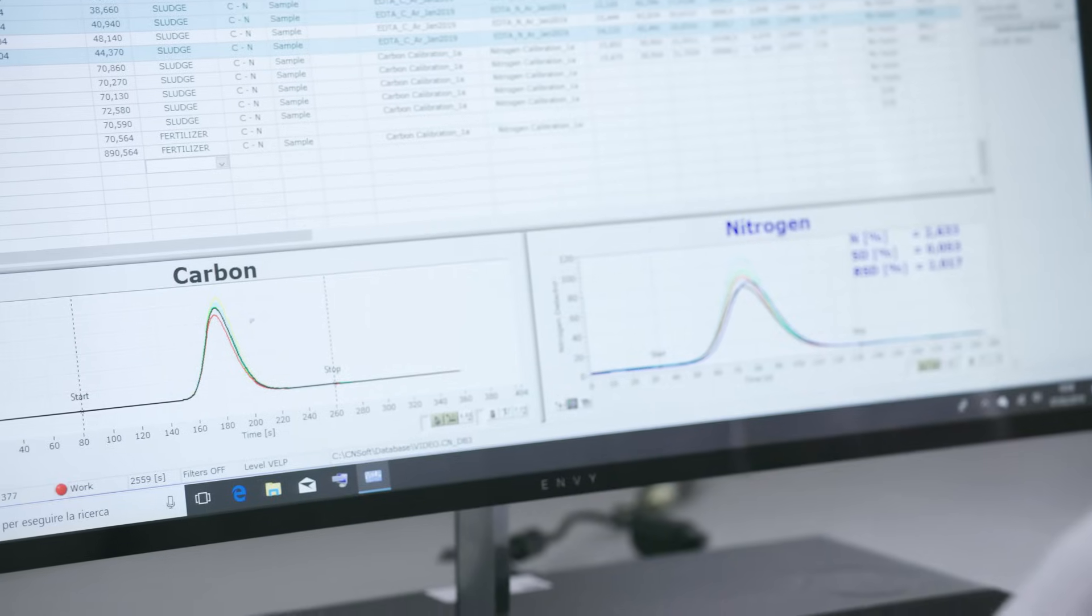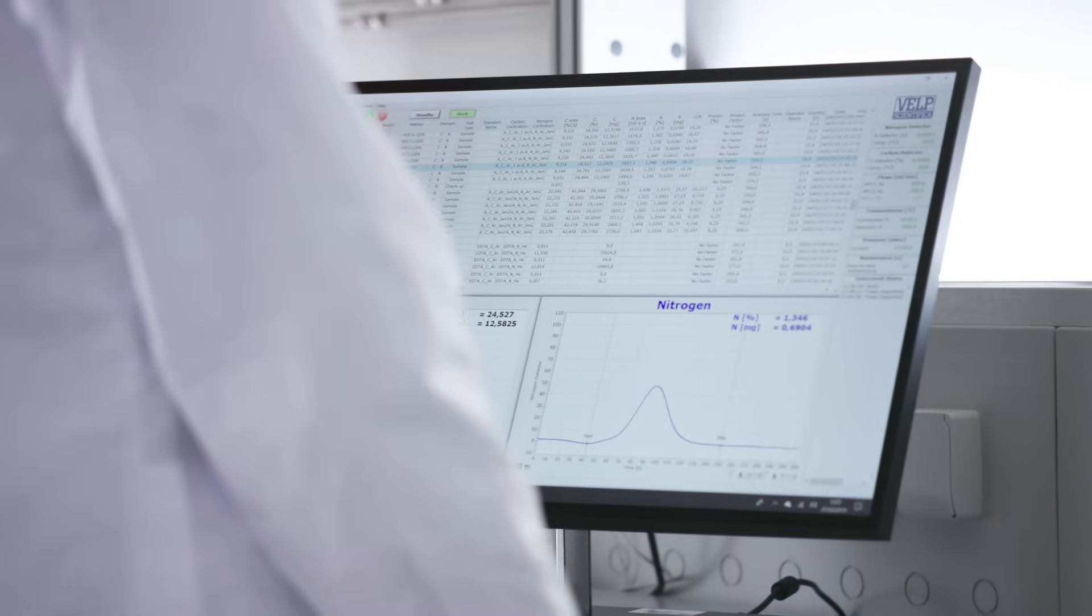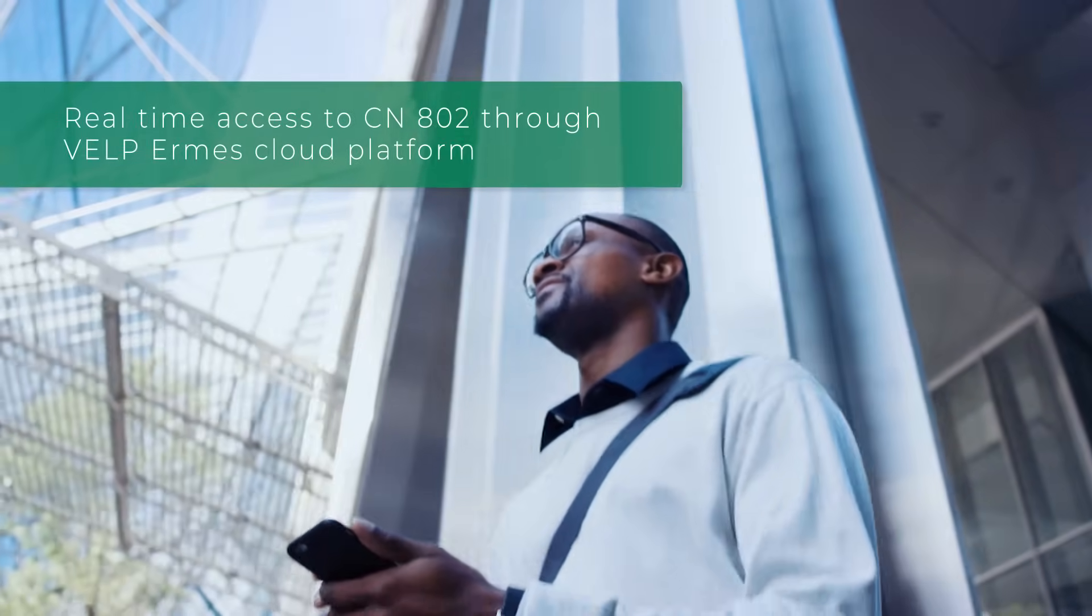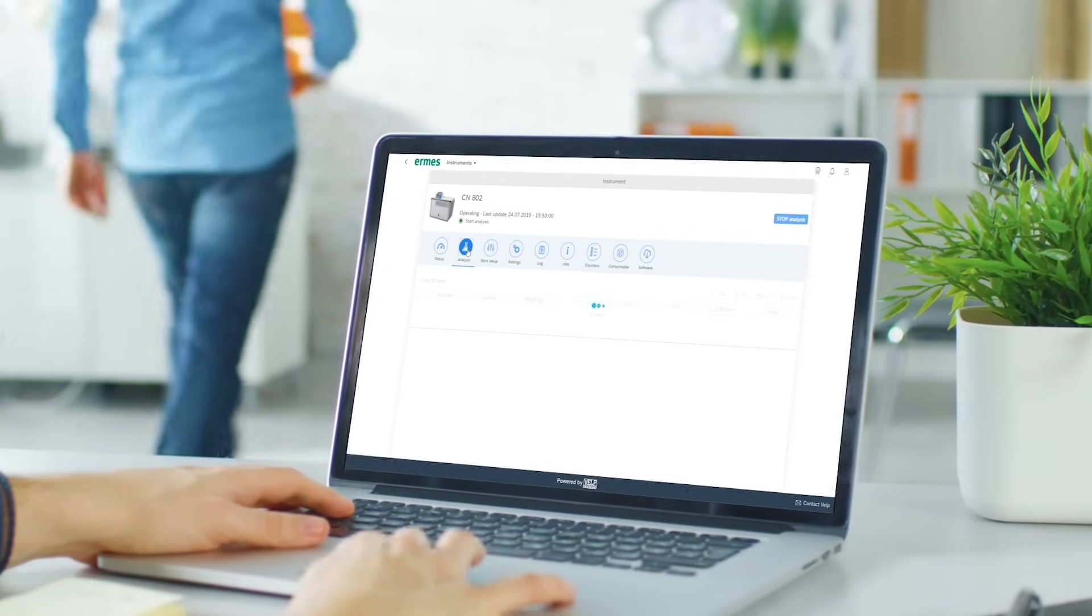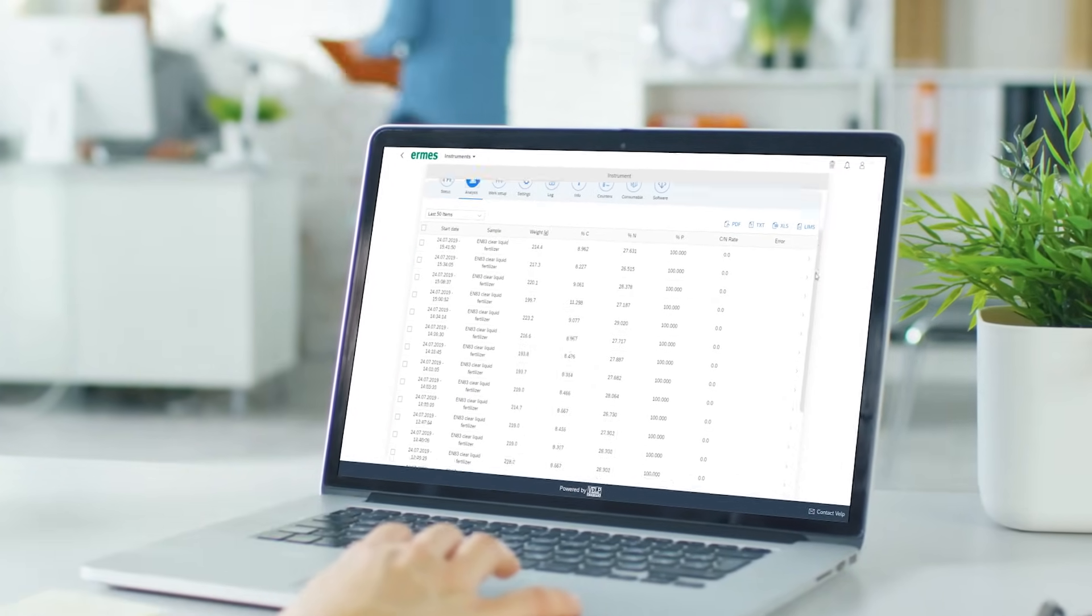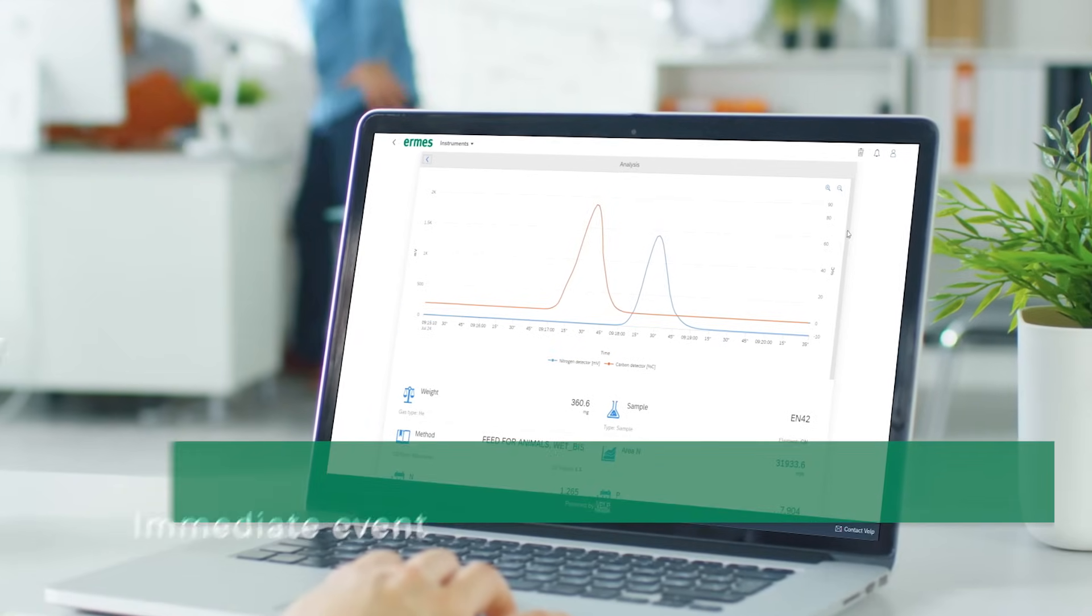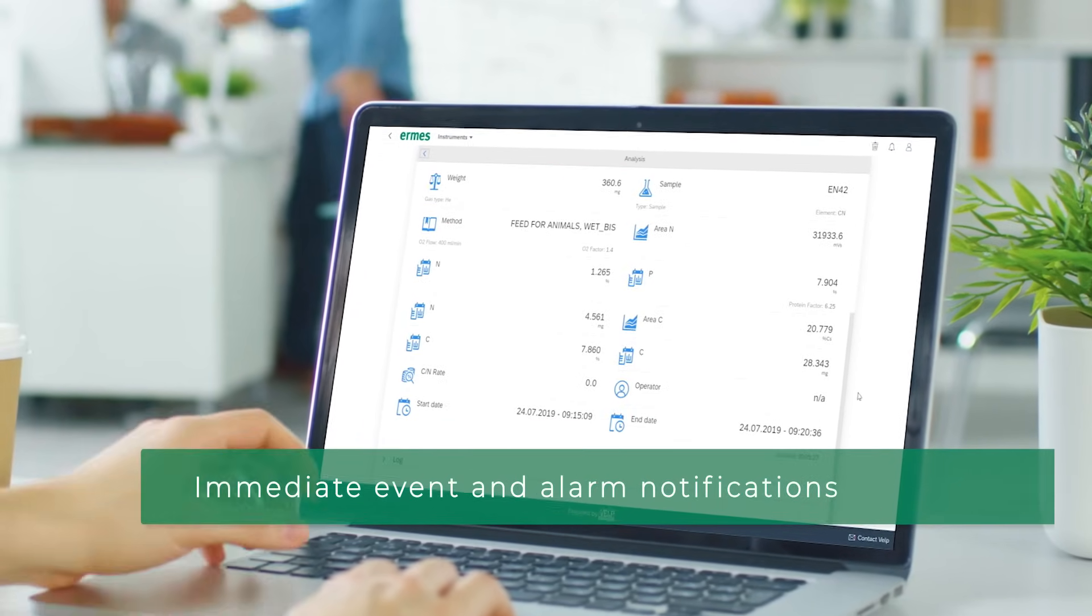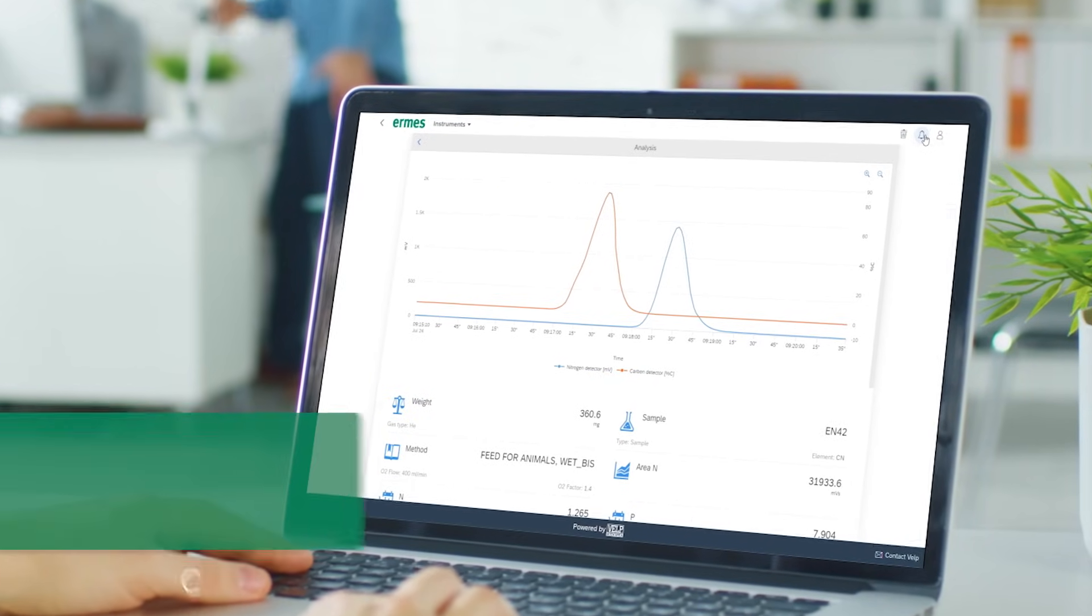Two graphs in the dedicated software will show nitrogen and carbon results. The VELP CN802 is designed to work unattended and by connecting to the VELP Hermes cloud platform it is possible to monitor and control your analysis remotely in real time and to receive immediate notifications. VELP Hermes will allow you to have an instrument that improves over time.